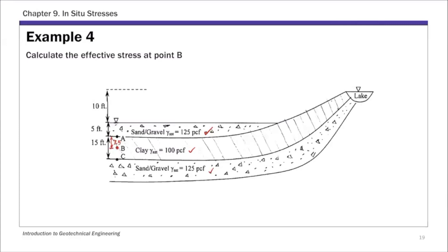To calculate the effective stress at point B, we can always use the effective stress equation, and we're going to do that for this example. Given the soil profile, the geometry, and the unit weights, we can calculate the total stress pretty easily.